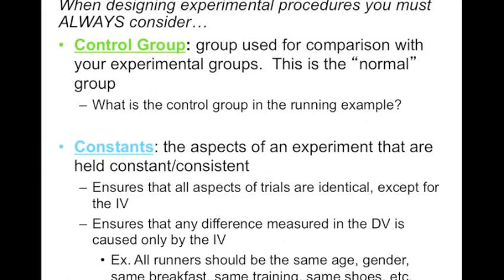For our running example, if I'm wanting to test as my independent variable these different drinks, everything else needs to be the same. My runners should be the same age, the same gender, have the same breakfast, the same training, the same shoes and equipment. As many things should be kept constant as possible so that the only difference between my runners is what they're drinking. That way, when I measure those differences at the end, I measure that dependent variable, how quickly they're running, I can say that any differences that result are due to the independent variable.